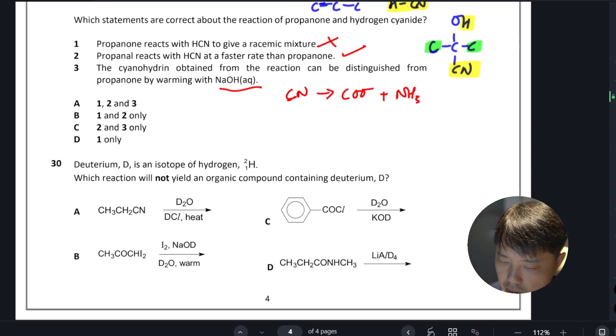Okay, last question. Deuterium is an isotope of hydrogen. Which reaction will not yield an organic compound containing deuterium? So the first one is hydrolysis, so you will get...